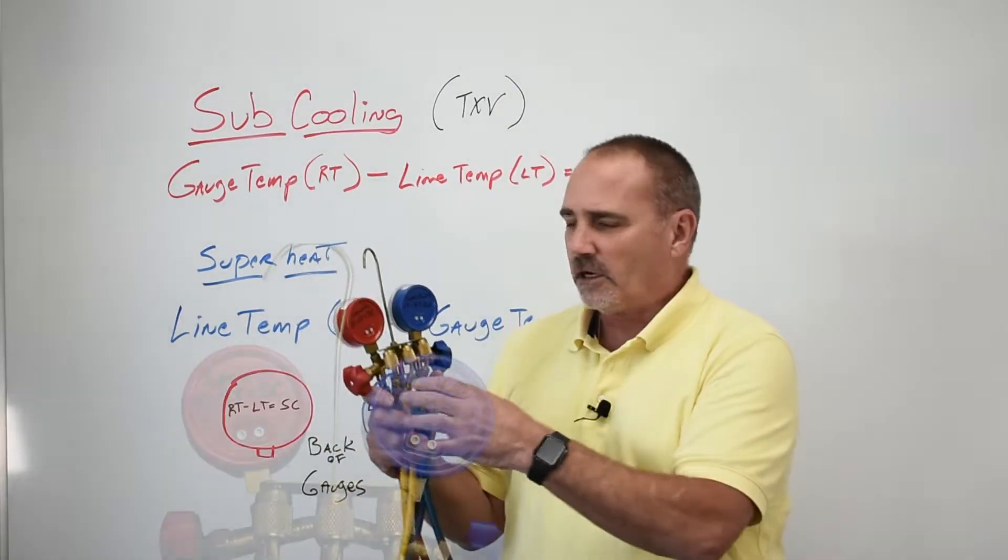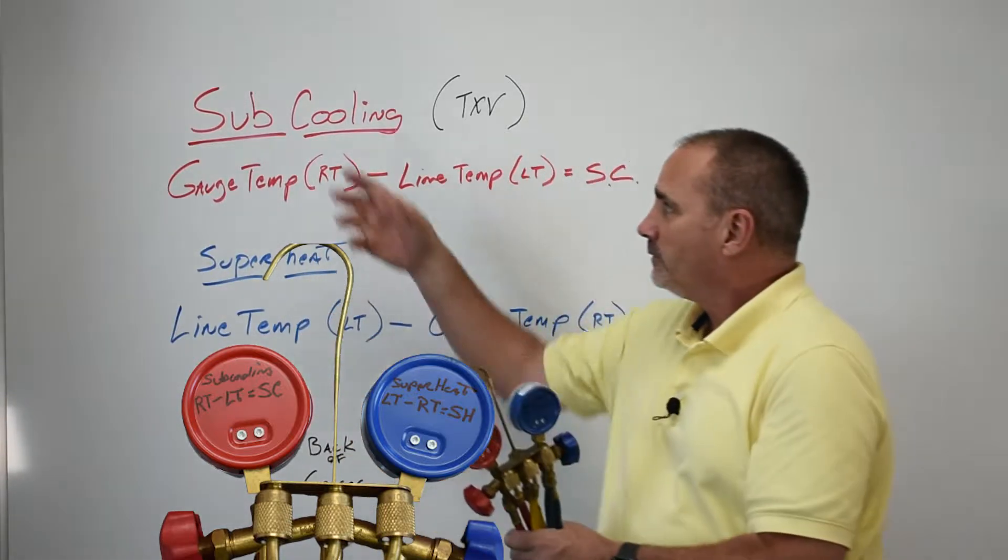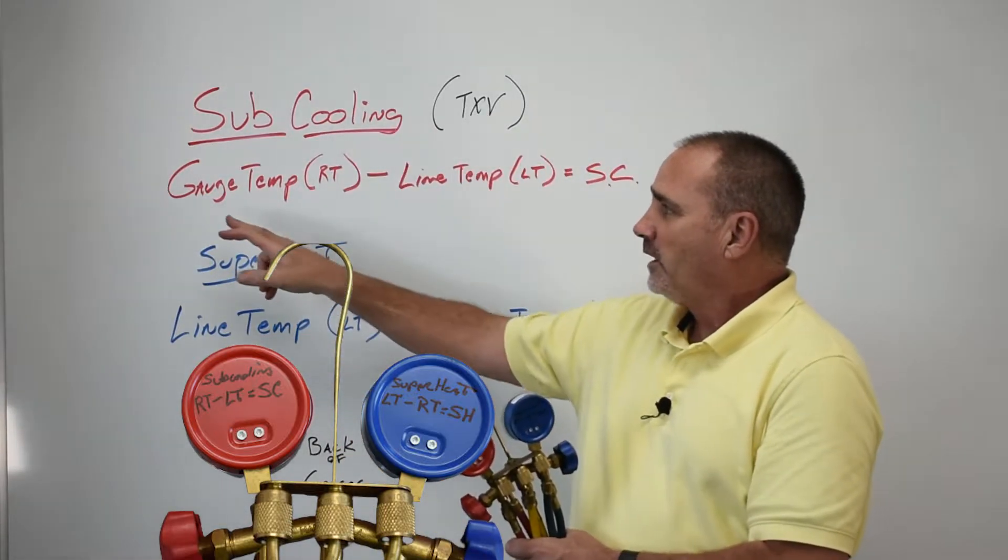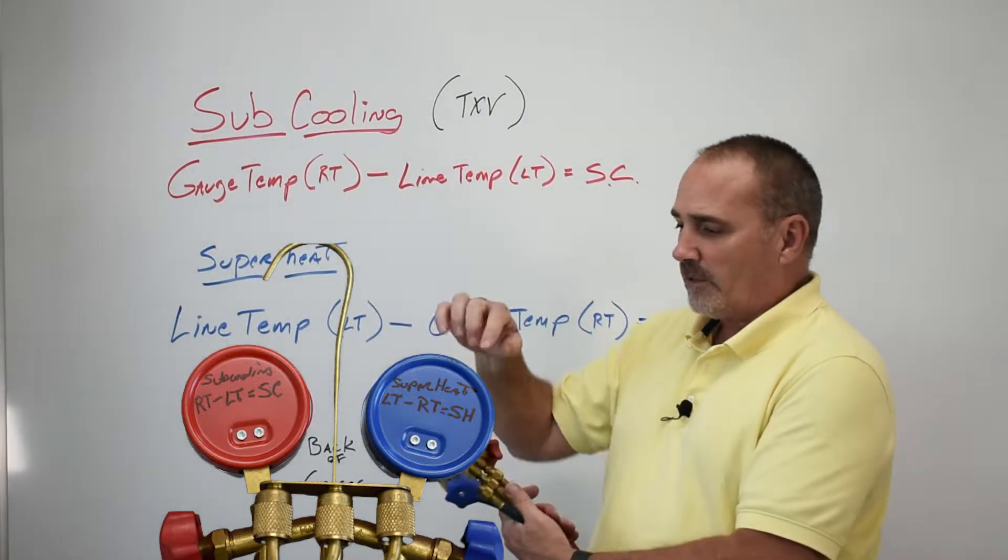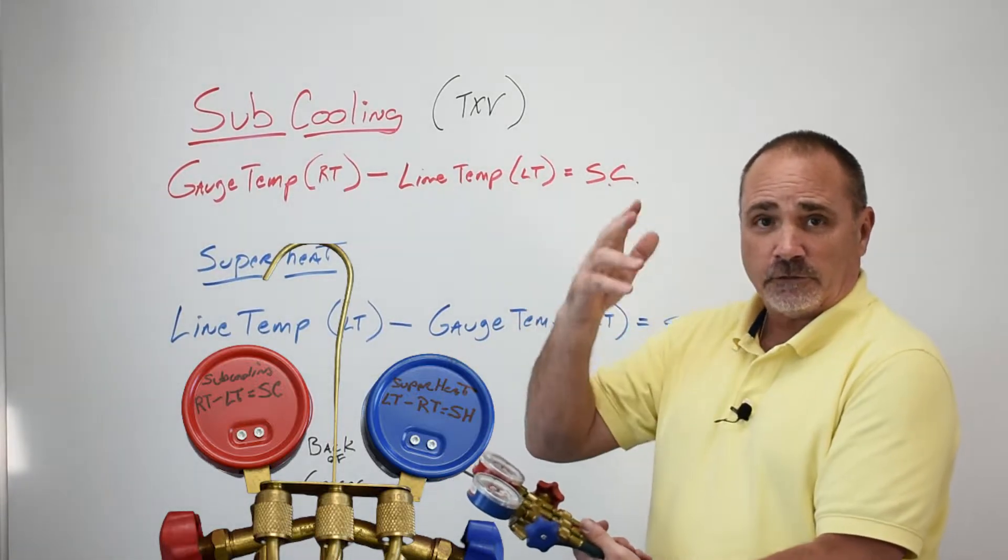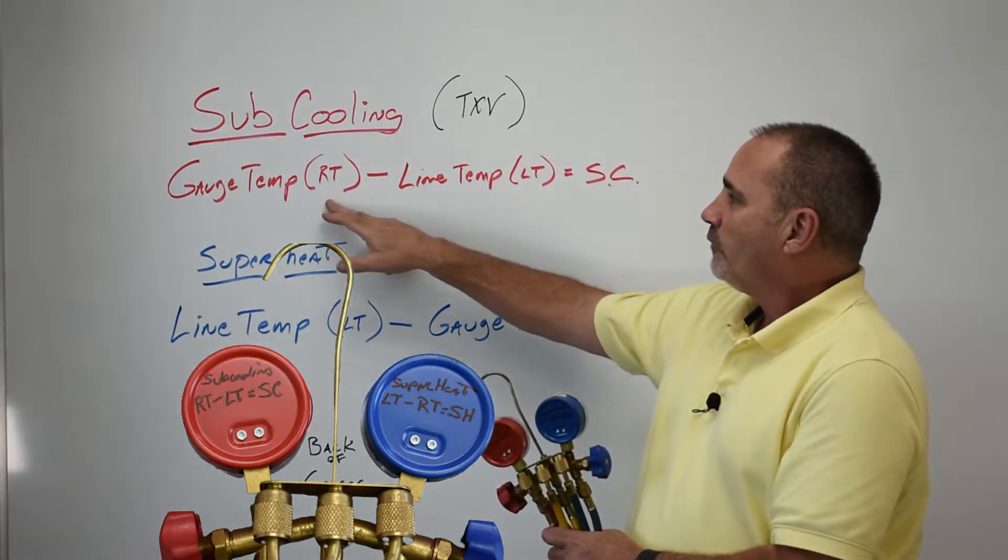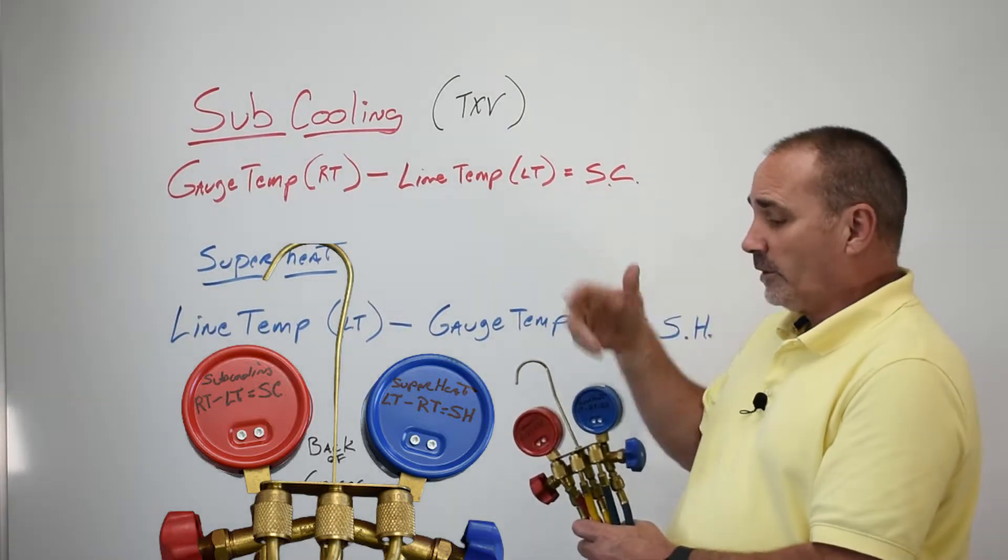What I suggested - and this is the gauges of a young kid - we just wrote on the back: sub-cooling, typically for TXV, gauge temp (of course I wrote it as RT for refrigeration temp), so whatever refrigeration ring you're looking at, be it R-22 or 410A or whatever, refrigeration temp on the gauge minus the line temp equals your sub-cooling. Easy to remember, it's right there.